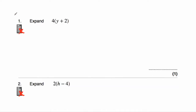Question number one asks us to expand 4(y + 2). To expand brackets, we just multiply what's inside the brackets by the term outside. So we're going to multiply both y and positive two by four. Four times y would be 4y, and then four times two would be eight, so plus eight. The answer is 4y + 8.